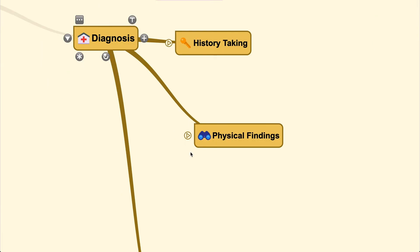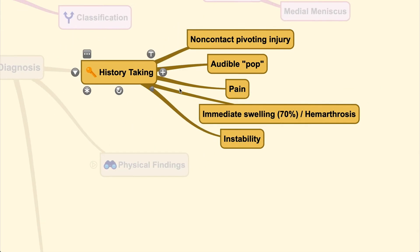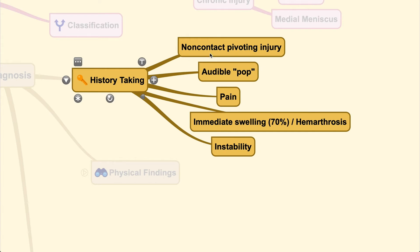For diagnosis, the first step is history taking. In exam questions, the phrase 'audible pop' is frequently mentioned in the vignette and is a keyword indicating ACL tear. During history taking, you will find the patient was doing a non-contact sport with a pivoting or rotational force around the leg. There will be pain, immediate swelling followed by hemarthrosis, and instability of the knee. Sometimes patients are still able to bear weight on the affected limb, but sometimes they are not able to ambulate.